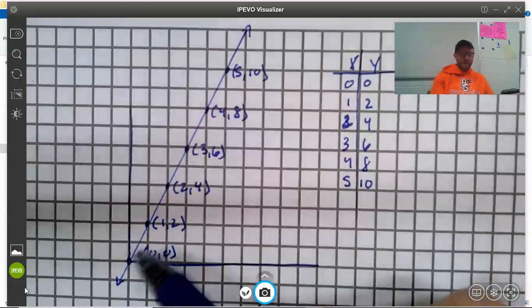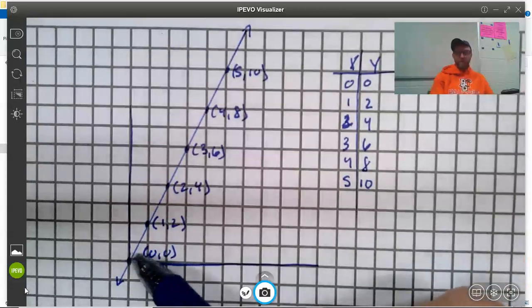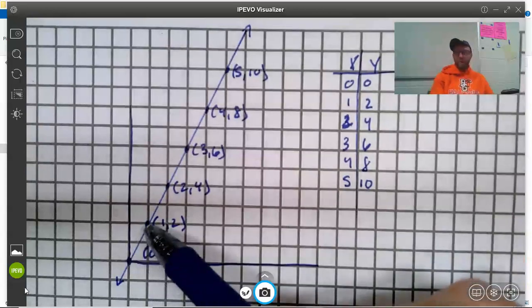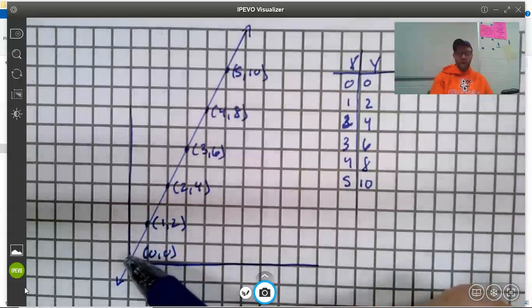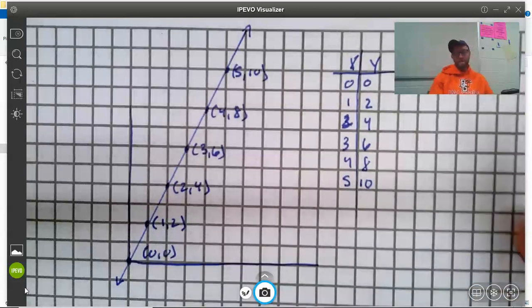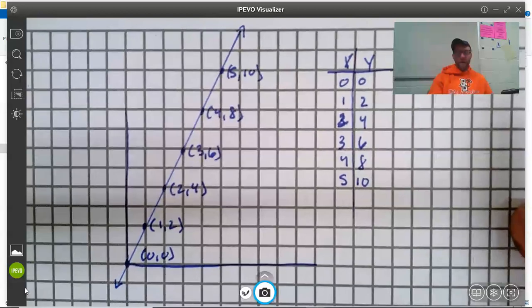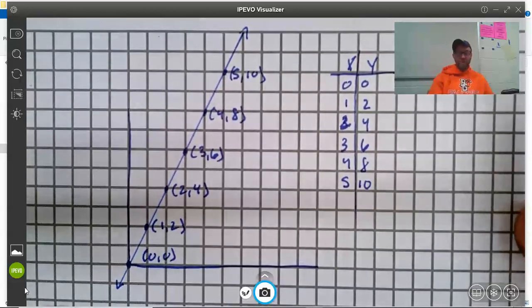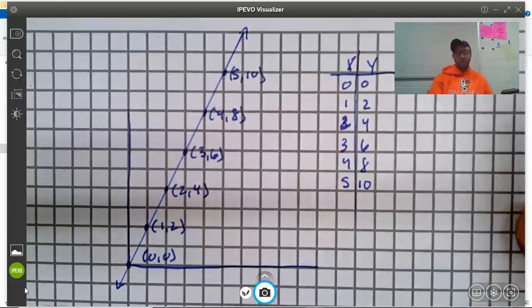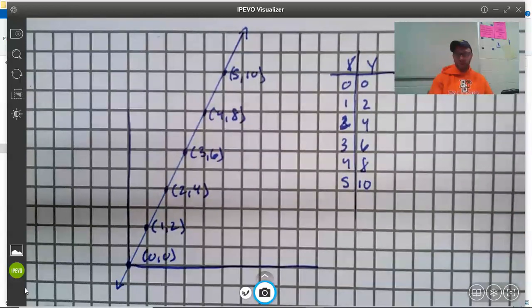So delta x is how far did I move left-right, going from one position to another. Delta y, that's how far did I move up or down. We're going to talk about a specific application for this change in x and change in y, and that application is called slope. Of course, I know you've heard of slope before, and I want you to forget that I said slope right now.